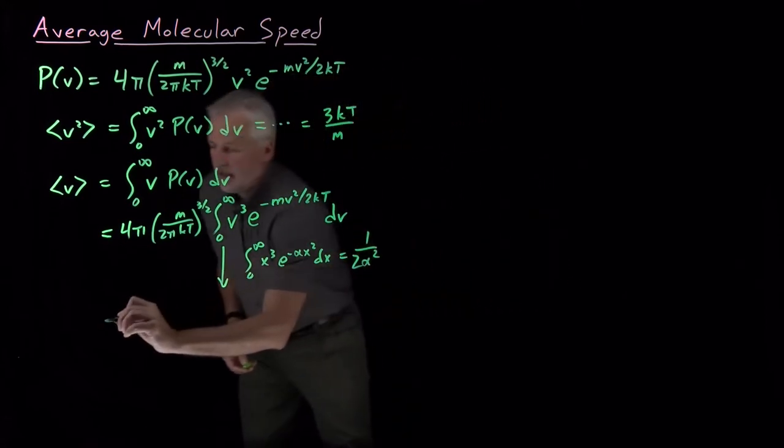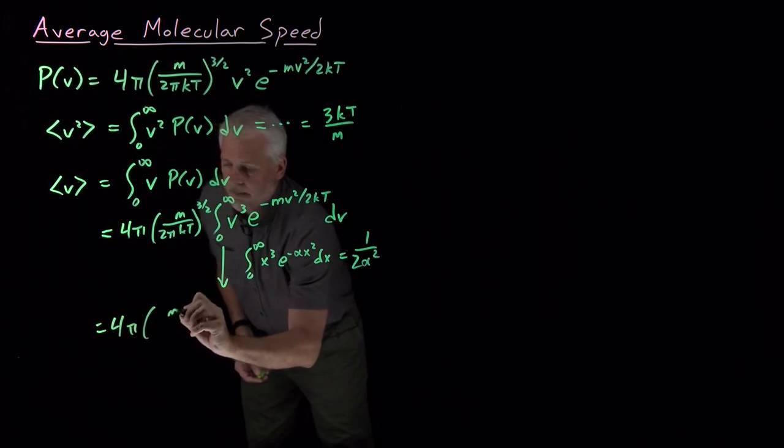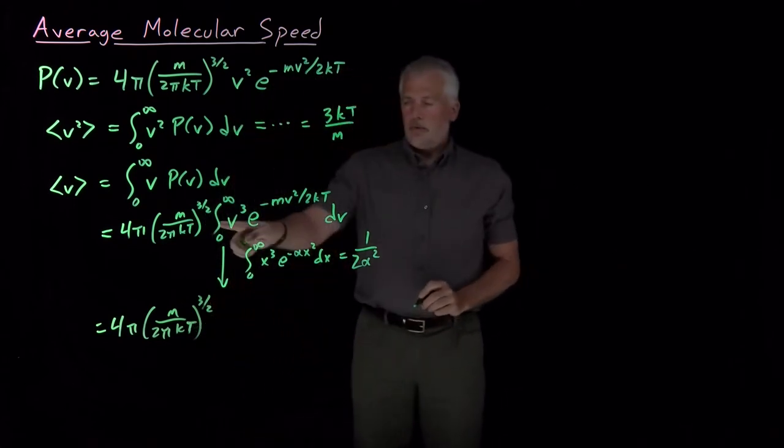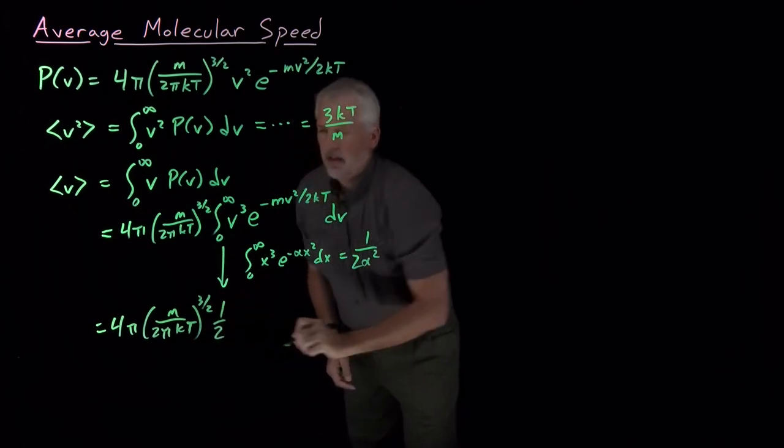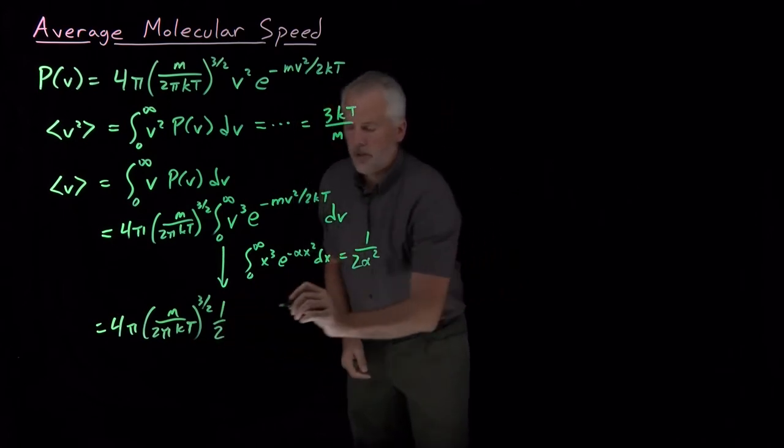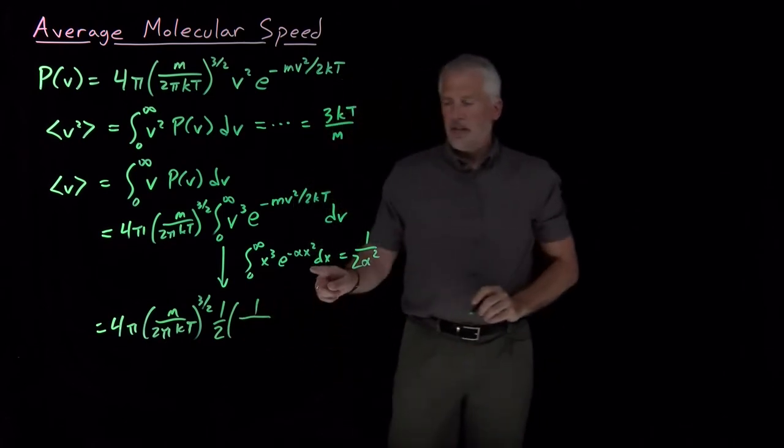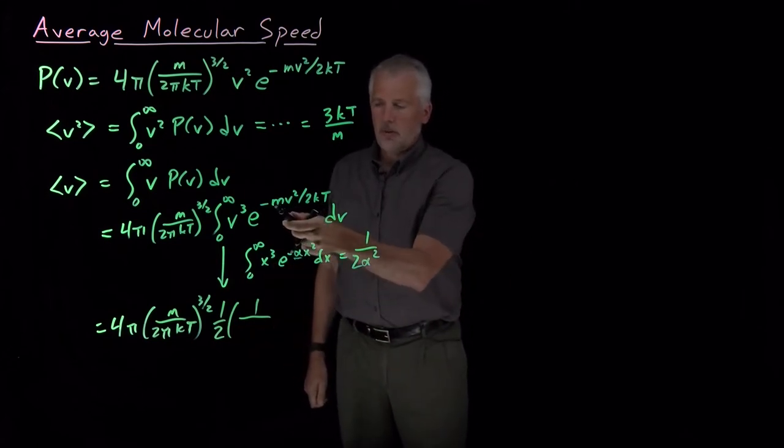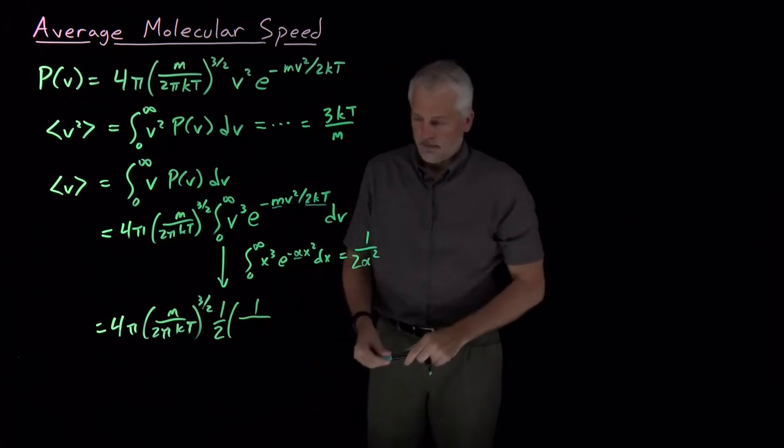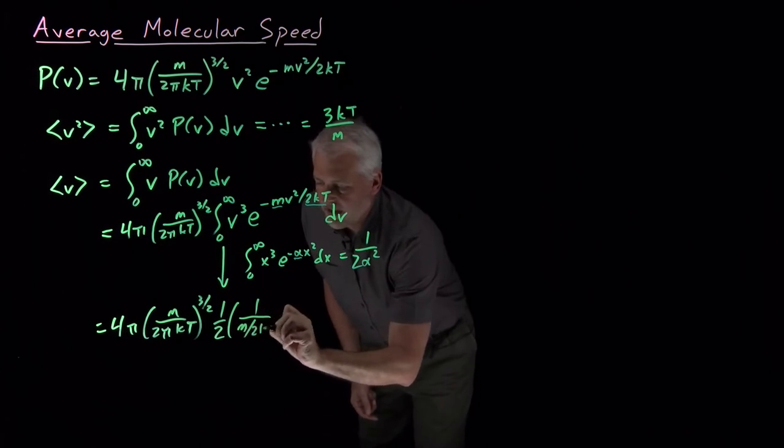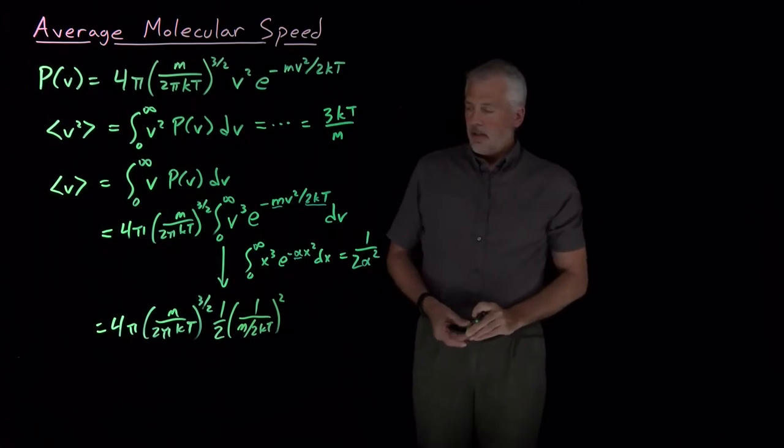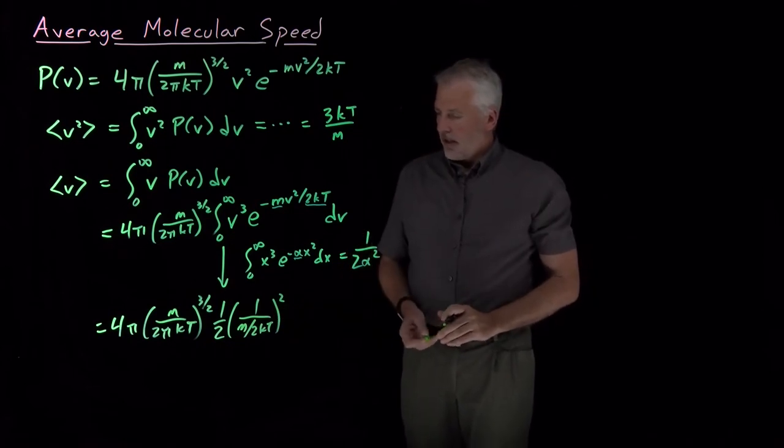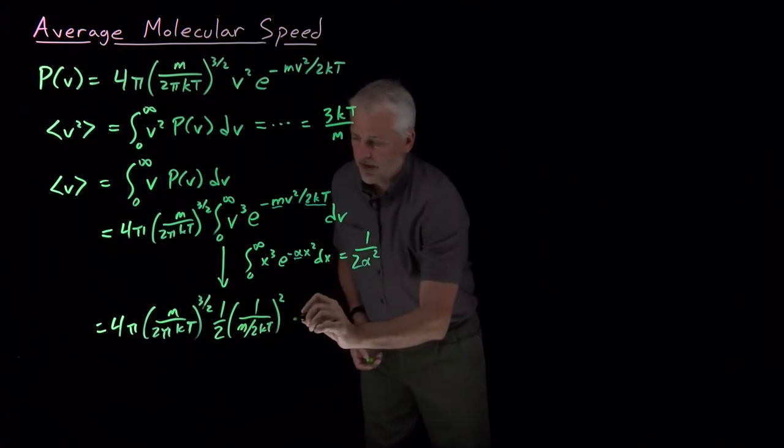But for now, we can just use that result to say that if I keep the constants out front, performing this integral gives me this quantity 1 over 2 and a 1 over alpha squared. So in this case, by 1 over alpha squared, alpha is the coefficient in the Gaussian, the coefficient that multiplies the variable squared. So our variable squared is v squared, so the coefficient is the m over 2 kT. So I've got alpha is m over 2 kT in the denominator, and I'm squaring that whole thing. And so now we've just reduced this to a bunch of constants and thermodynamic variables, and we just have to clean it up and simplify it a bit. Let me go ahead and rewrite this last term without the fraction of a fraction.